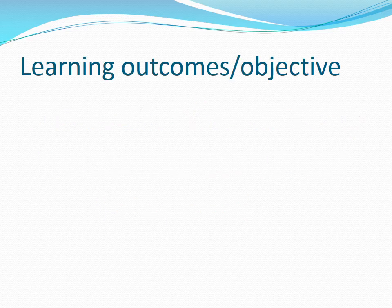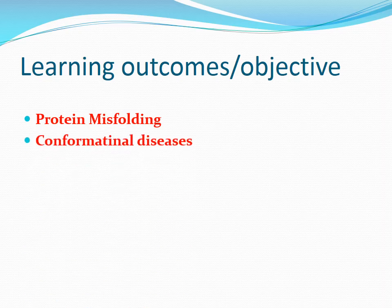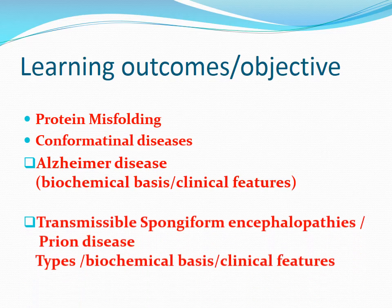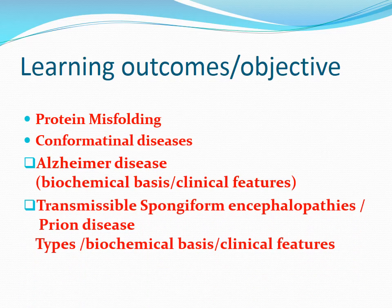Learning outcomes or objectives are: protein misfolding, conformational diseases, biochemical basis and clinical features of Alzheimer's disease, types, and biochemical basis and clinical features of transmissible spongiform encephalopathies or prion disease.